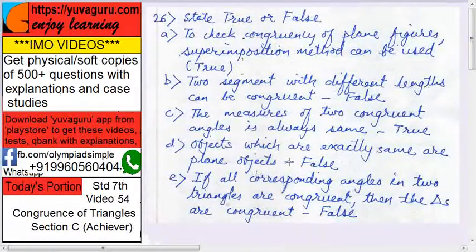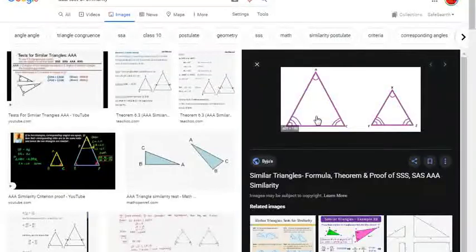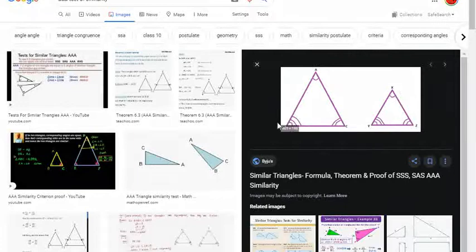If all the corresponding angles in two triangles are congruent, then the triangles are congruent - false. See these two triangles ABC and XYZ. All the angles are congruent, but are the triangles congruent? No, they are similar. This is a test for similarity.